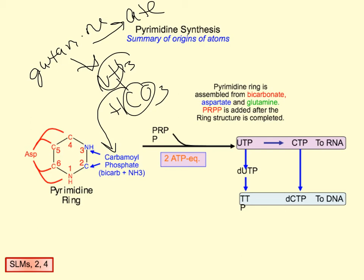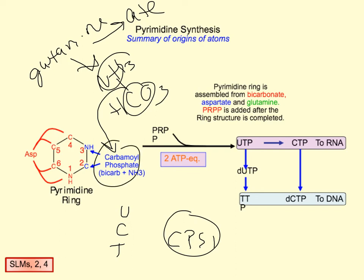Of the pyrimidines, the important ones are uracil, cytosine, and thymidine. Condensing the pyrimidine ring with PRPP forms UTP, and then we go from UTP to CTP, or from UTP to dUTP to TTP. Importantly, the carbamoyl phosphate used in the urea cycle is made by CPS1 in the mitochondria, whereas the carbamoyl phosphate incorporated into pyrimidines is formed by CPS2 in the cytosol — a different enzyme catalyzing the reaction, with the main difference being its location.